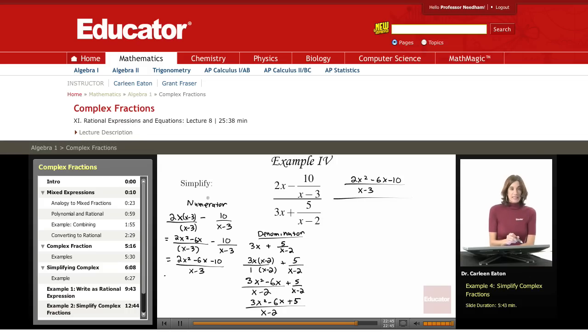So I simplified the mixed expression in the numerator. That's right there. Now I simplified the mixed expression in the denominator to get this rational expression, which is 3x squared minus 6x plus 5 all over x minus 2. The last thing I'm going to do is simplify this rational expression.